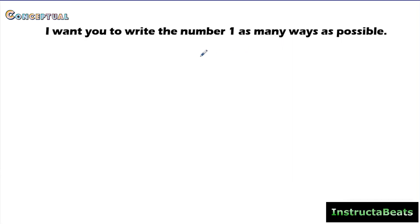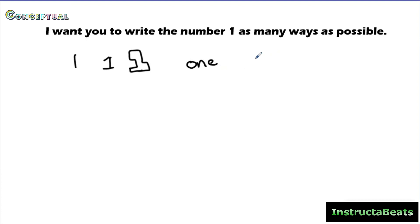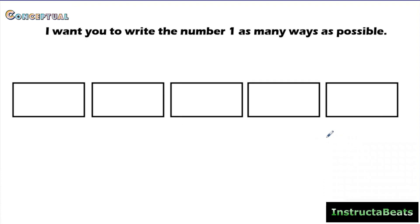Hopefully you got at least a couple ways down. Most of you probably just wrote the number 1. You might have tried to be smart and write it in different ways — different fonts, a block one, or in word form. Maybe you started writing equations like 3 minus 2, because that expression equals 1, or 1 times 1. So you could have had a lot of different things written down. I'm going to pull up some area models to help us with this thinking.